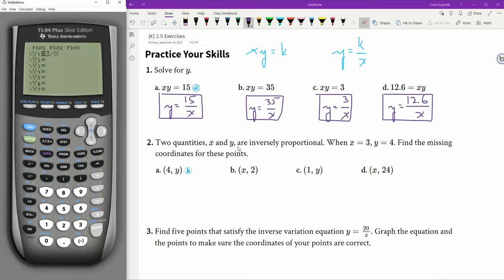All right, two quantities, x and y, are inversely proportional. When x is 3, y is 12. Find the missing coordinates for these points. Okay.